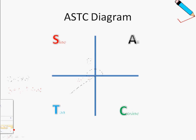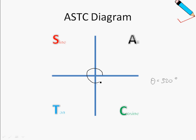In the fourth quadrant, also known as the cosine quadrant, let's say theta equals 320 degrees. Measuring anti-clockwise: 90, 180, 270, and then 320 degrees — this entire huge angle is my theta. Alpha is always measured with respect to the horizontal axis, so this angle here is my alpha.